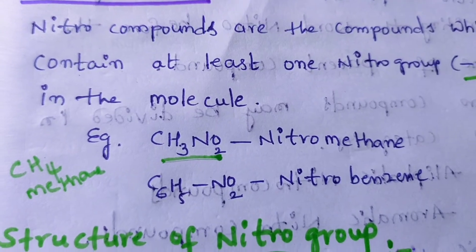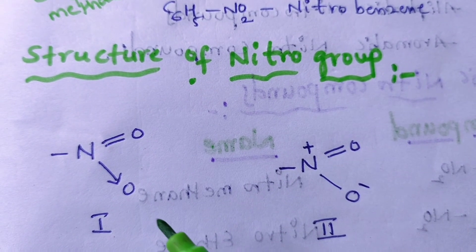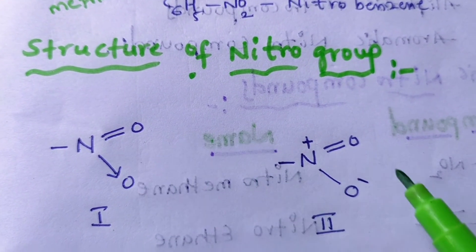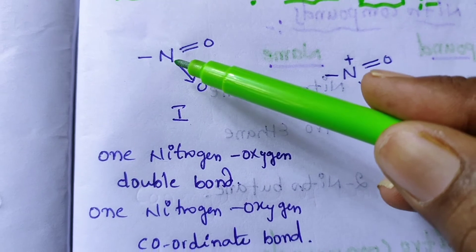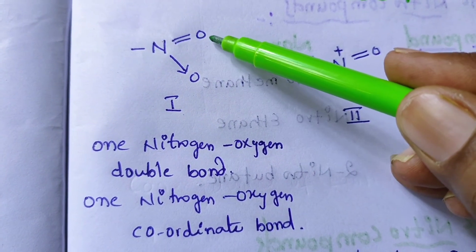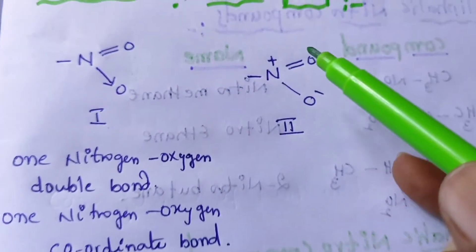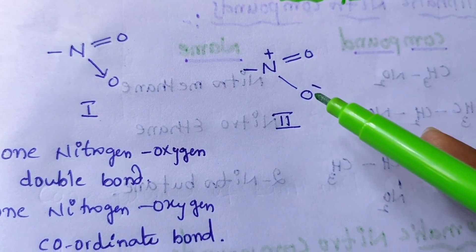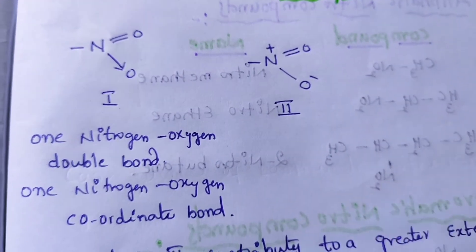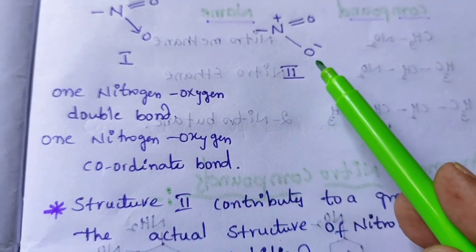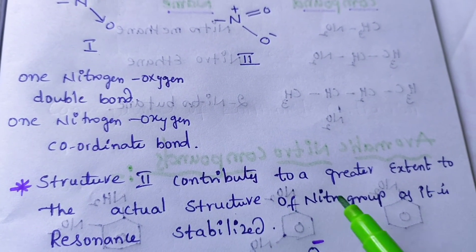Coming to the structure of the nitro group. See here, I have written two structures — first and second. In the first structure, one nitrogen-oxygen bond is a double bond and one nitrogen-oxygen bond is a coordinate bond. In the second structure, nitrogen is positive, one oxygen has a negative charge, and nitrogen-oxygen is a double bond. The second structure contributes to a greater extent to the actual structure of the nitro group.